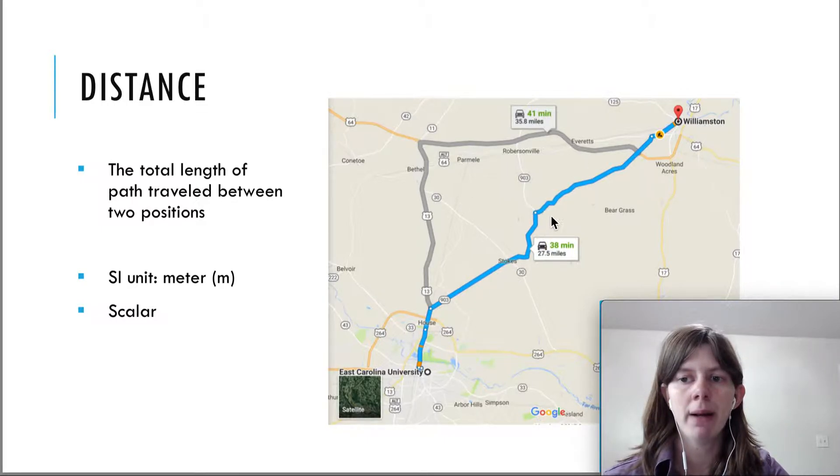Did you take the blue path, the shorter path? What distance was that? That was 27.5 miles. Or did you take the gray path that was a little bit longer? 35.8 miles.